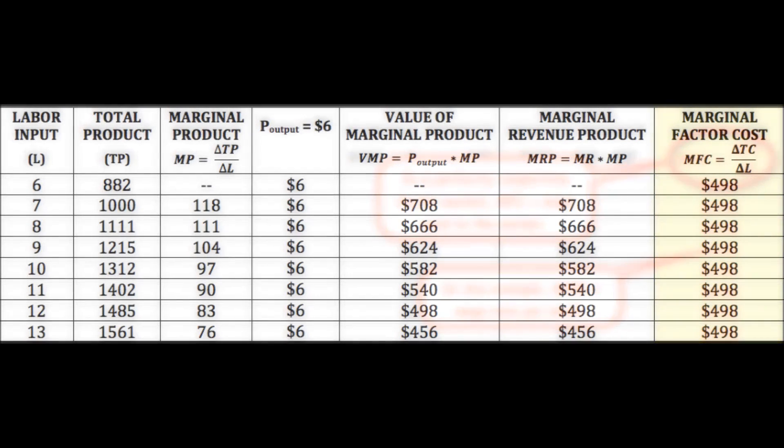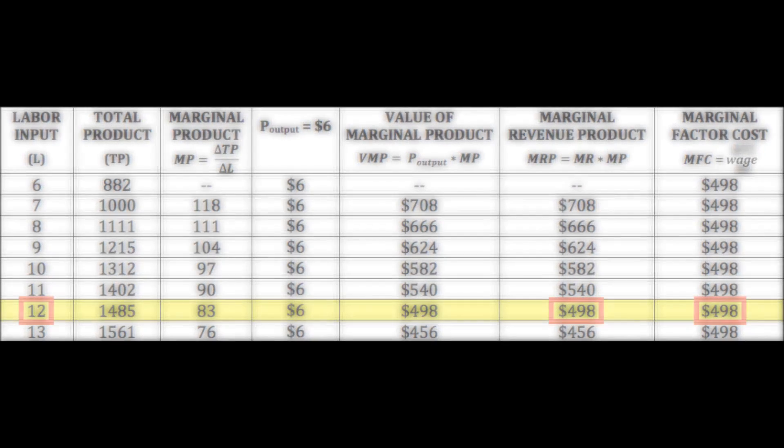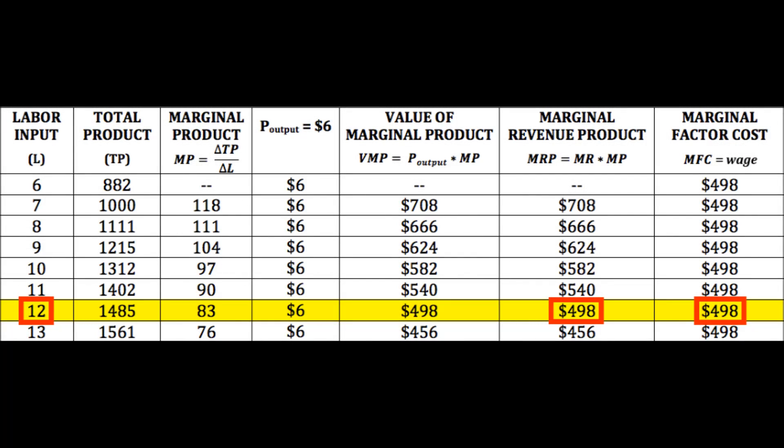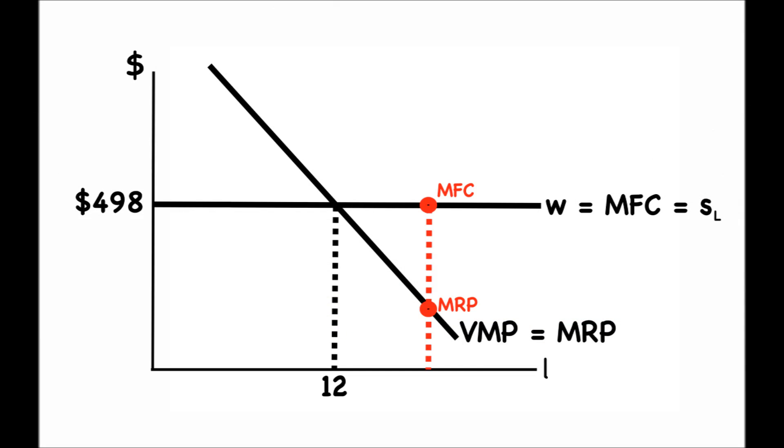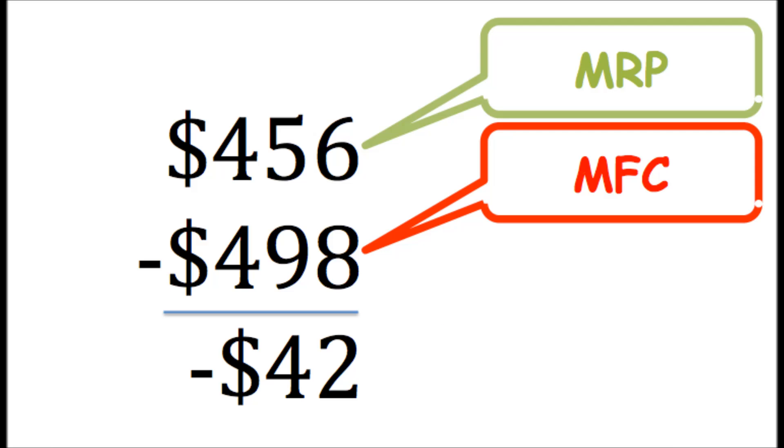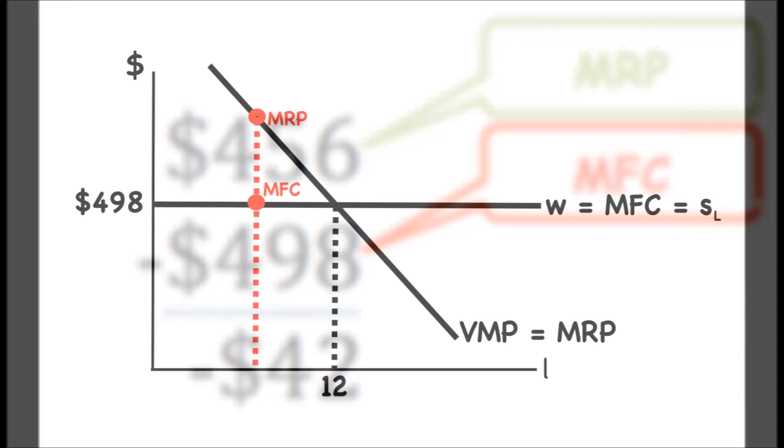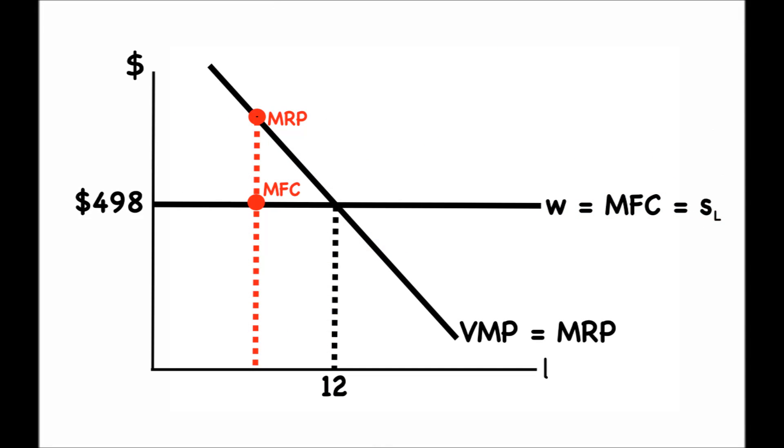So, now that we have all of the pieces, we can see that for this firm, marginal revenue product equals marginal factor cost at 12 workers. If the firm hires more workers past this point, then the marginal factor cost is greater than the value of the marginal product, and additional wages would not be covered by any addition to revenue. If the firm hires less workers, then value of the marginal product is greater than marginal factor cost, and the firm could be increasing profit by hiring more workers.